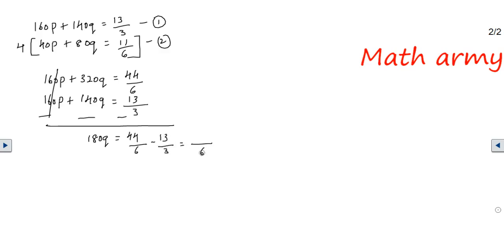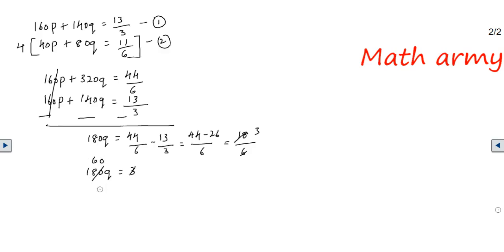So 180q = 3. Dividing both sides: 3 divides 180 sixty times, giving 60q = 1. Therefore q = 1/60.